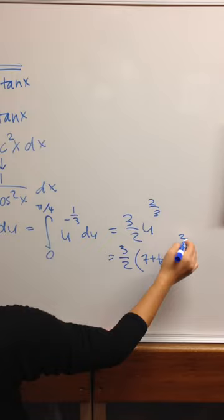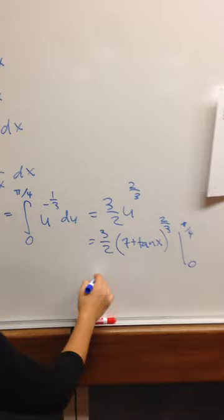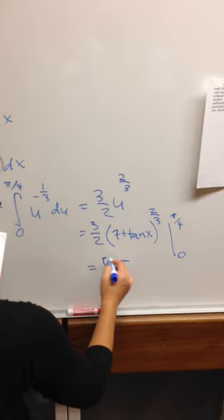and integrating that from pi over 4 to 0, which is 6 minus 3 over 2 of 7.